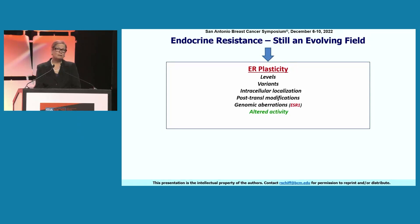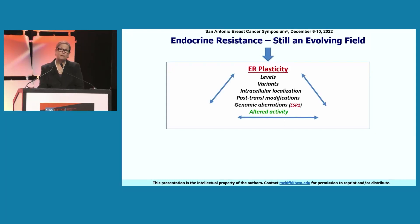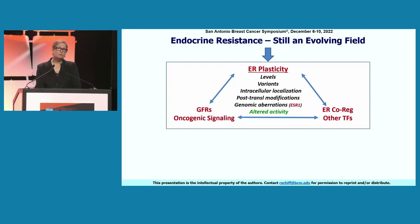One needs to realize that all these features lead to altered activity of the estrogen receptor, meaning it can remain active even in the presence of endocrine agents. But also, as a transcription factor, it can bind to other elements on the DNA of the chromatin to activate different sets of genes — a phenomenon known as transcriptional reprogramming, which you will hear more about in the next talk.